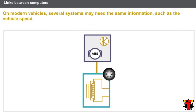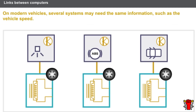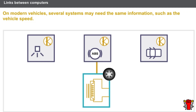On modern vehicles, several systems may need the same information, such as the vehicle speed. It is not necessary to use a sensor for each system; the information need merely be exchanged between the computers.